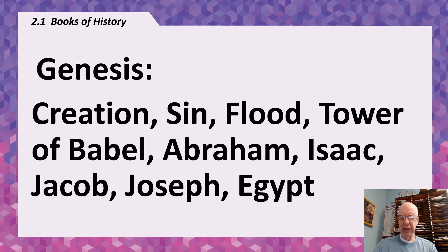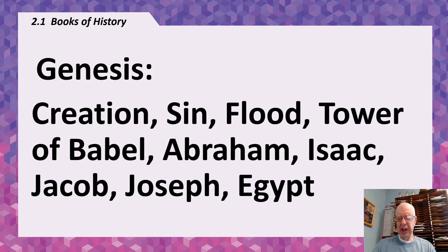They had sons and daughters and the people grew, but they had sin in their life and did bad things. They did so many bad things that God decided he would only save one family and all the animals, and destroy everyone else with a flood. So Noah built the ark. He put all the animals in it along with his family, and they were saved from the flood.